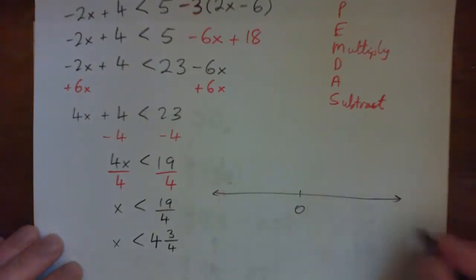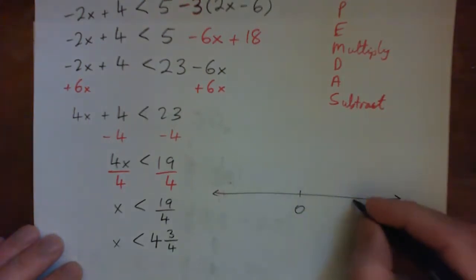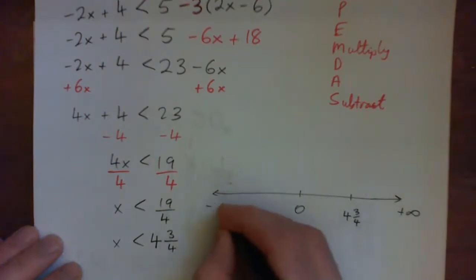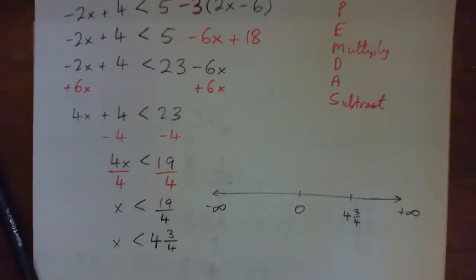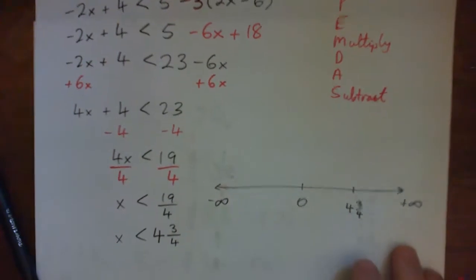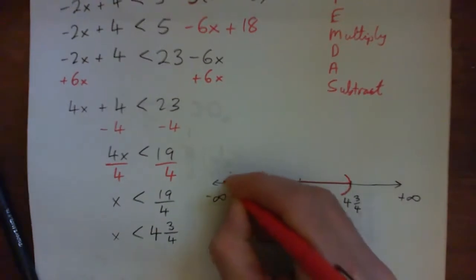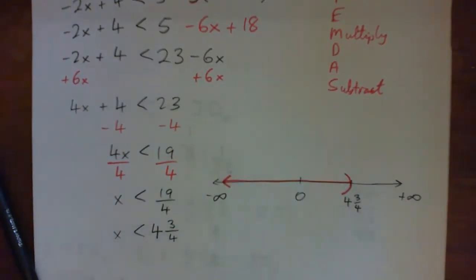So basically, on a number line, you know, 1, 2, 3, let's just say this is 4 and 3 quarters here. Okay. And that's positive infinity. That's negative infinity. And it's less than 4 and 3 quarters. So let's use the parenthesis here. And towards negative infinity. Okay with that? Okay. Yep.